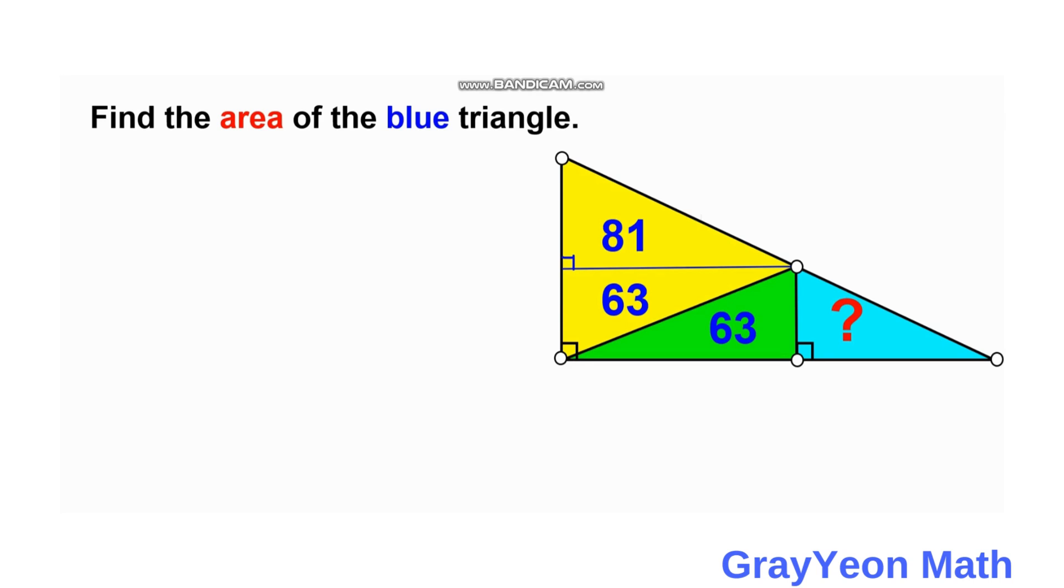Next, we label this height as h_A and this as h_B, and this as the B, the base of this green triangle.